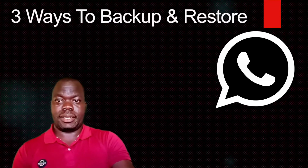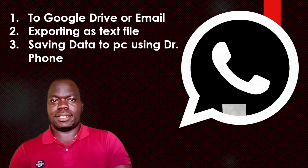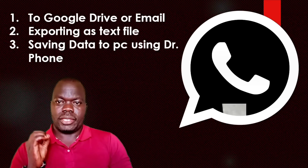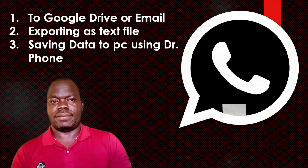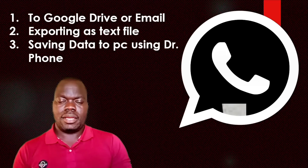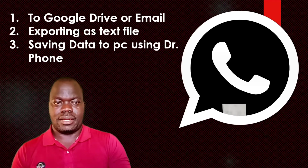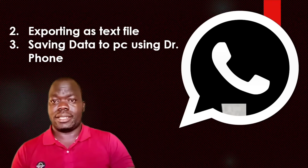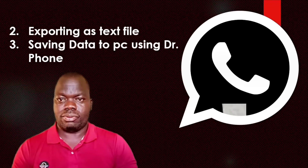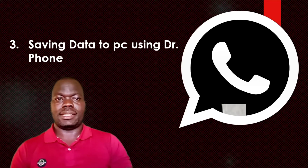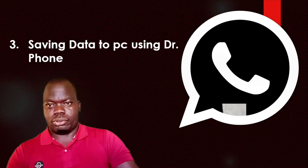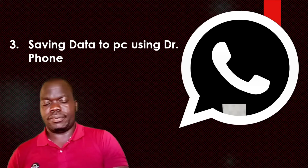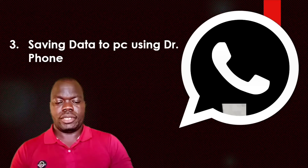The three methods are: first, backing up to Google Drive — this saves your WhatsApp backup to Google Drive, and when you reinstall WhatsApp you can access it and recover everything. Second is exporting to a text file, which I showed in the previous video. Third is saving data to PC using Dr.Fone — this is very useful because if you lose your phone you can restore it back.